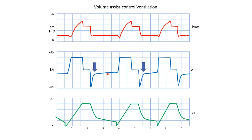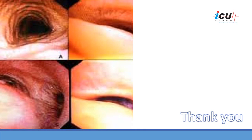Following the sudden drop in flow, the plateau phase shows flow continuing gradually; however, there is not enough time for complete exhalation. The patient develops auto-PEEP or dynamic hyperinflation on top of the dynamic collapse of the airway. You can appreciate the trapped volume on the volume over time curve, where this area represents the amount of air trapped in the lung.